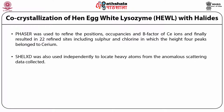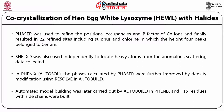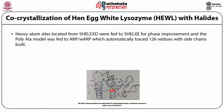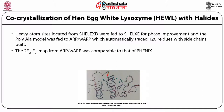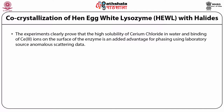SHELXD was also used independently to locate heavy atoms from the anomalous scattering data. In PHENIX, the phases calculated by PHASER were further improved by density modification using RESOLVE in AUTOBUILD. Automatic model building was later carried out by AUTOBUILD in PHENIX, and 115 residues with side chains were built. Heavy atom sites from SHELXD were fed to SHELXE for phasing improvement, and the poly-alanine model was fed to ARP/wARP, which automatically traced 126 residues with side chains. The 2Fo-Fc map from ARP/wARP was comparable to the PHENIX map. The superposition of the model with the deposited atomic resolution structure of hen egg white lysozyme showed an RMSD of only 0.18 Å. The experiments clearly prove that the high solubility of cerium chloride and binding of cerium ions on the surface of the enzyme is an added advantage for phasing using lab source anomalous scattering data.